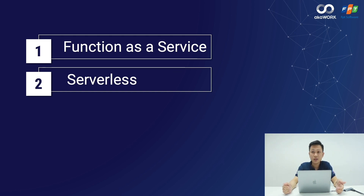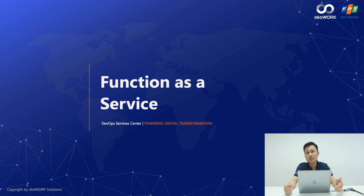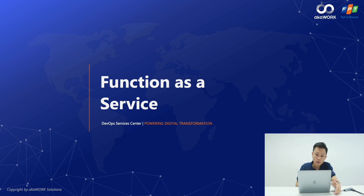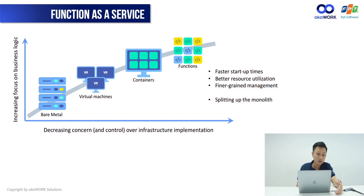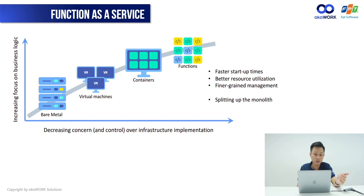Before we start this topic, let's first talk a bit about function as a service. One of the things we've seen is the evolution of infrastructure — starting with bare metal, moving to virtual machines, which was the basis for creating cloud computing platforms. Then container technologies exploded and were applied in many fields because of their outstanding features.